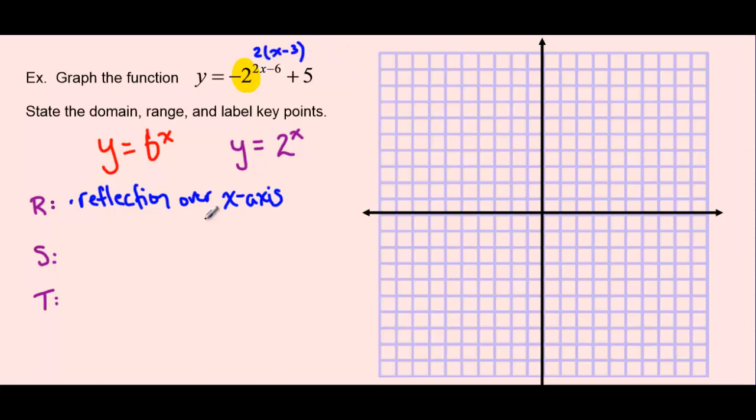And so now we can see that the k value in front of the x is 2, which means that we're going to have a horizontal compression of 1 half. There's also a negative 3 beside the x, so that is a translation to the right 3 units.